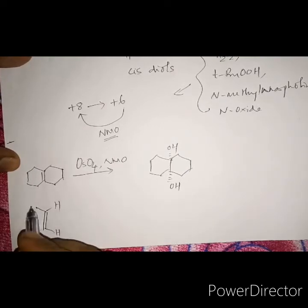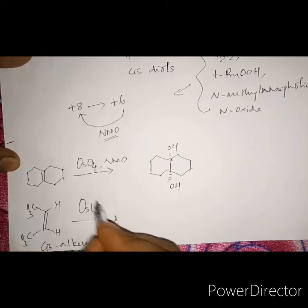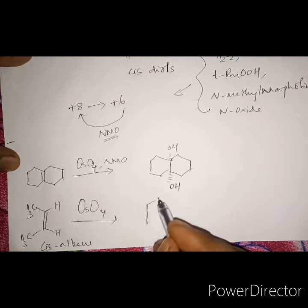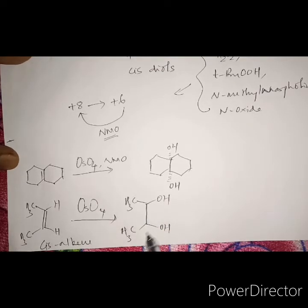Consider a cis-alkene with H and CH₃ groups. When treated with osmium tetroxide, we get the hydroxylated product with OH groups and methyl groups added on the same side across the double bond.